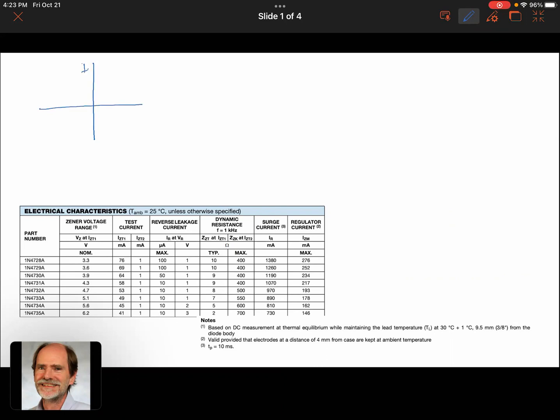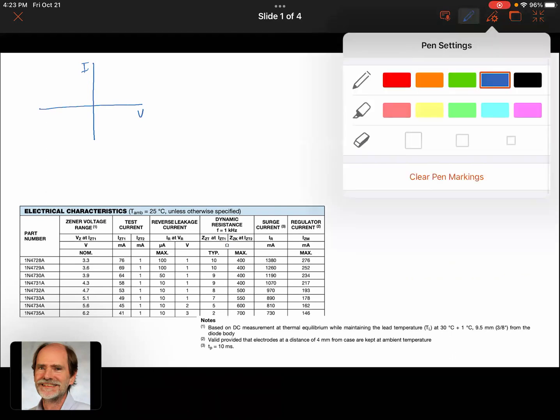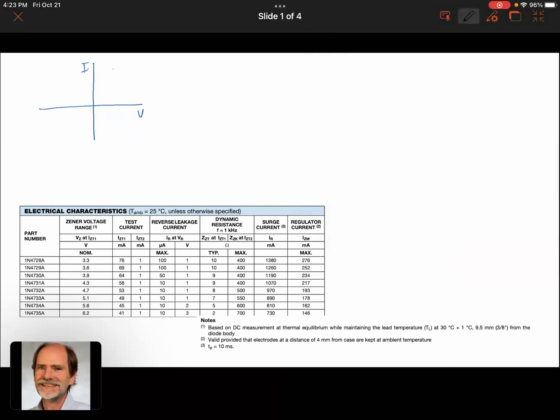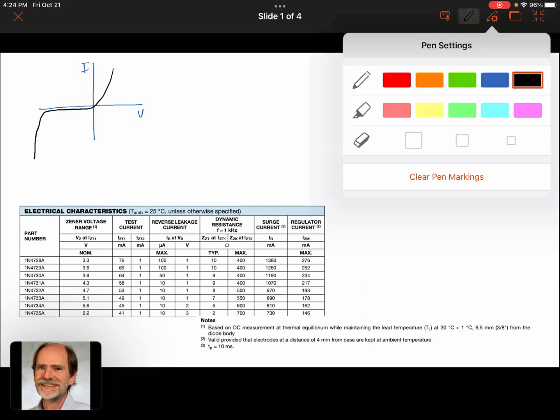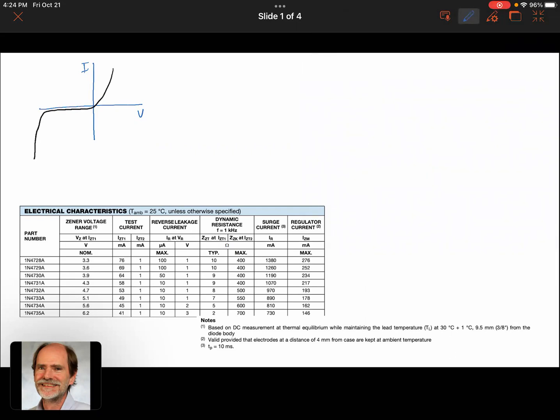We have a current versus voltage, and the Zener starts off looking just like a normal diode. It has the exponential forward, and then we have a reverse current which is very, very close to zero, and then it falls off very rapidly at some reverse voltage.